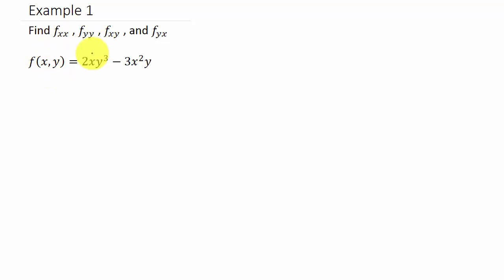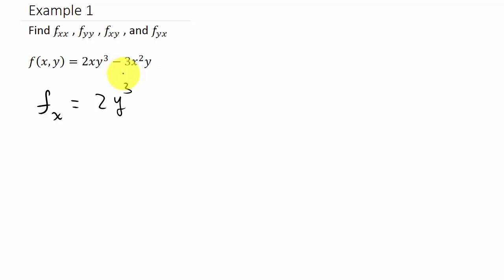The first thing we have to do is find the partial derivative of f with respect to x. Remember, y is treated like a constant term. So 2y cubed is constant — it's the same as finding the derivative of 5x, which is just 5. So the derivative of 2y cubed times x is 2y cubed. Then I bring the 2 down, giving 6x, subtract 1, times y. So this is the first partial with respect to x.